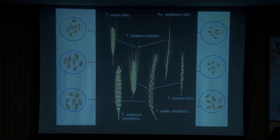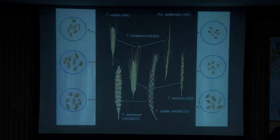We know that wheat is a self-pollinated crop. Some of these parents, like speltoides or tauschii, may have had a bit of cross-fertilizing nature, so they did cross with each other and produced this tetraploid wheat. This is the goat grass, the D-genome donor, and it crossed with the tetraploid to produce hexaploid wheat — this is how it evolved.